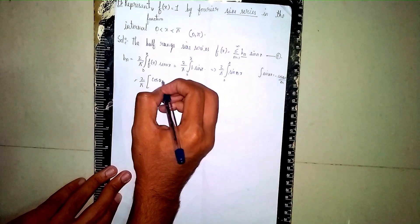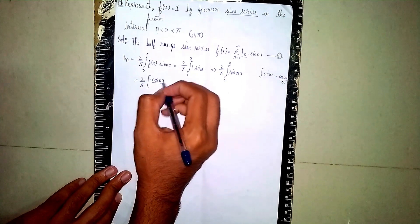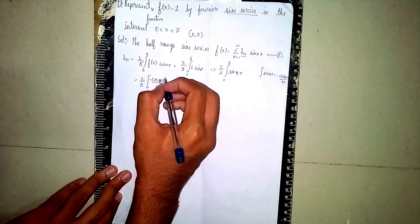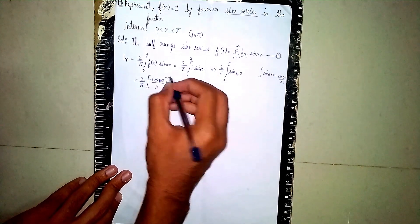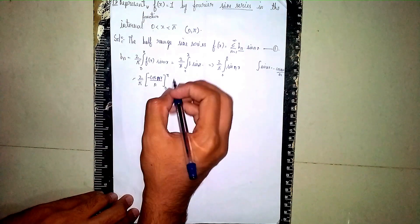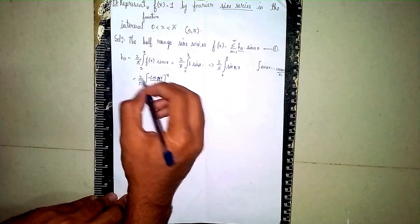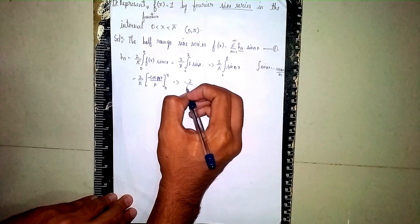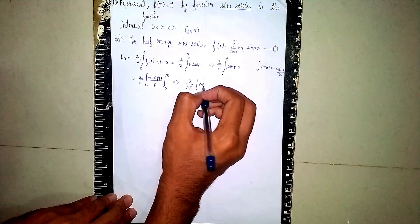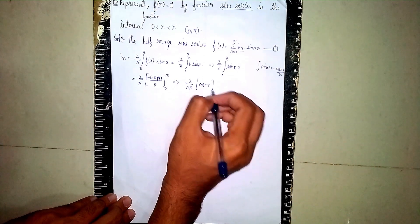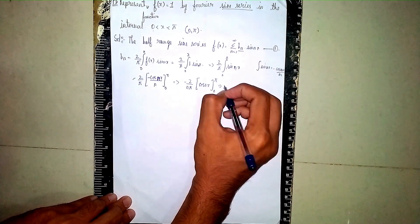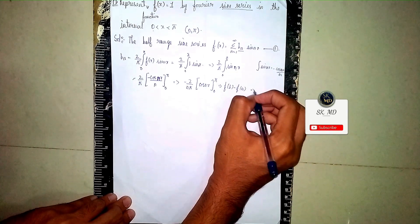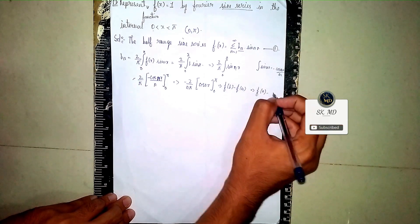It becomes (2/π) times the square bracket: negative cos(nx) divided by n, evaluated from 0 to π. Taking the minus sign outside, it becomes minus (2/nπ) times cos(nx), with limits 0 to π.